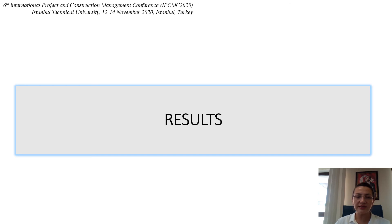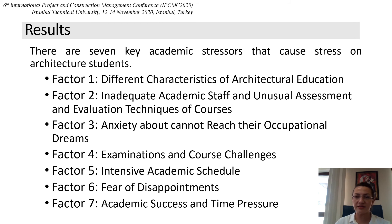In this research, academic stressors of architecture students and the correlations among academic stressors were determined. The results identify 7 key academic stressors: first, different characteristics of architectural education; second, inadequate academic staff and unusual assessment and evaluation techniques of courses; third, anxiety about not being able to reach occupational dreams; fourth, examination and course challenges; fifth, intensive academic schedule; sixth, fear of disappointment; and seventh, academic success and time pressure.